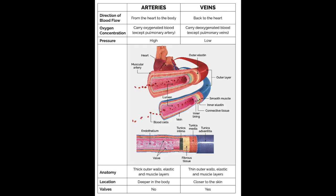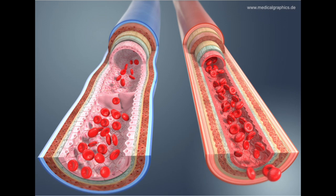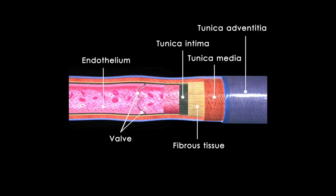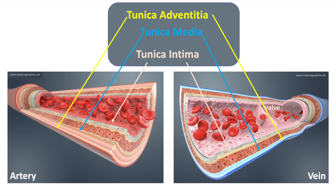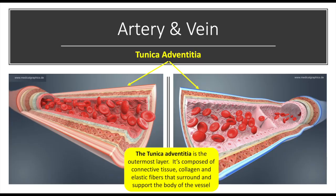Arteries take blood away from the heart to the tissues of the body. The veins return the blood back to the heart. The arterial system is a high-pressure system, while veins are a low-pressure system. Our peripheral veins have valves to prevent backflow of blood, and the arteries do not. Arteries and veins are similar in the fact they both have three vessel layers. The tunica adventitia is the outermost layer, comprised of connective tissue, collagen, and elastic fibers that surround and support the body of the vessel.